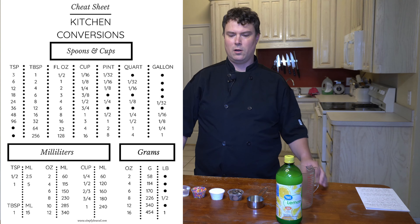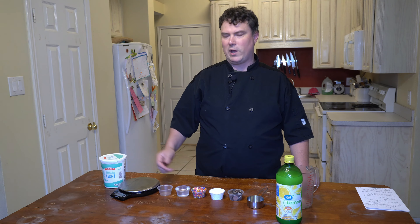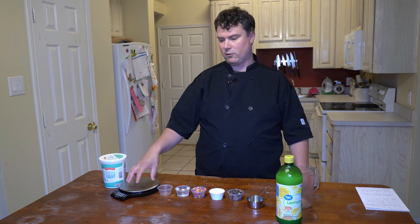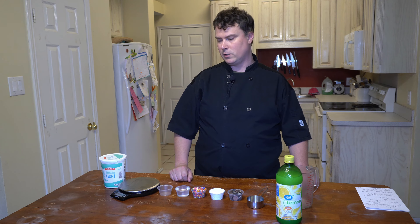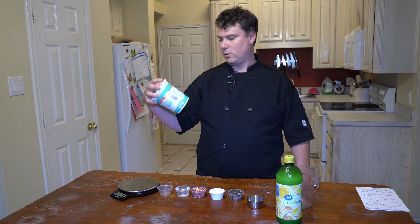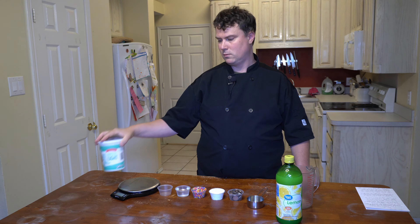They all are pieces of each other. With weight, it's just simple weight — however much it weighs is what it is. There are 16 ounces in a pound. This container is 32 ounces, so it's two pounds.